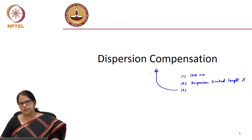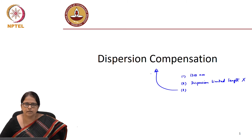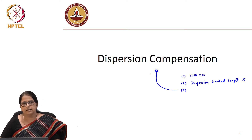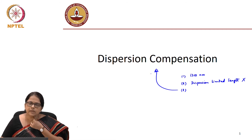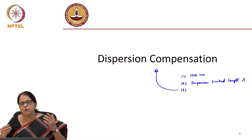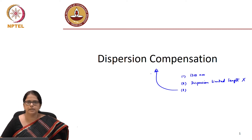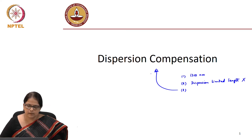Even though dispersion is a critical limitation in long distance communication, the good thing about dispersion is that we can very well characterize it. We know exactly how dispersion in the fiber behaves and how to quantify it, so we can make use of that information to compensate for dispersion. Before we go on to dispersion compensation, we will do a quick recap on fiber dispersion.